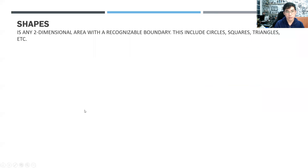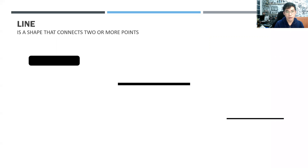Shapes: a shape is any two-dimensional area with a recognizable boundary — this includes circles, squares, triangles, etc. About lines, I'll show examples later. Be ready because in our next meeting on Thursday, I'll have you make a logo design based on a company name and its description.